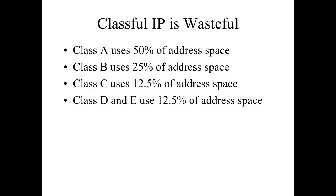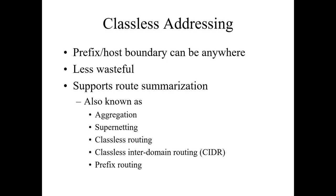This led us to what we call classless — we don't care about the class. We want to be able to manipulate that prefix or host boundary however we want, which is less wasteful. It supports route summarization. It could also be known as aggregation, super netting, classless routing, or prefix routing. Normally it's just known as variable length subnetting — VLSM.